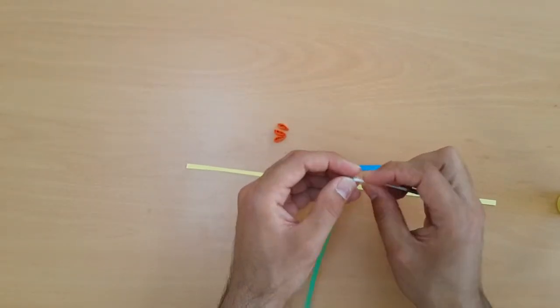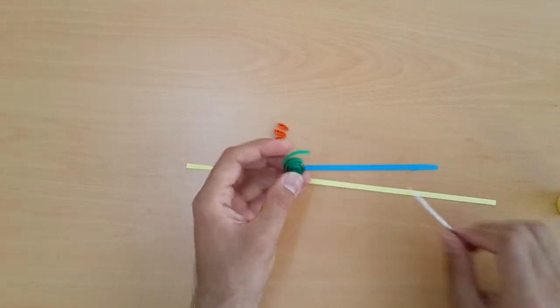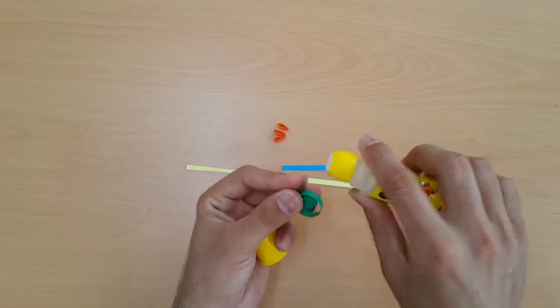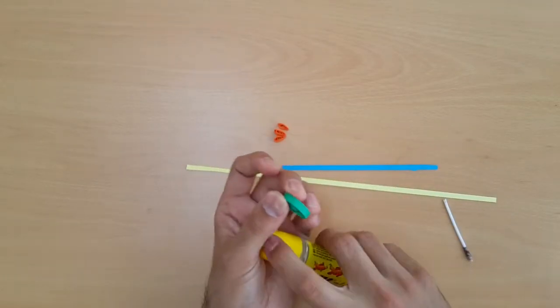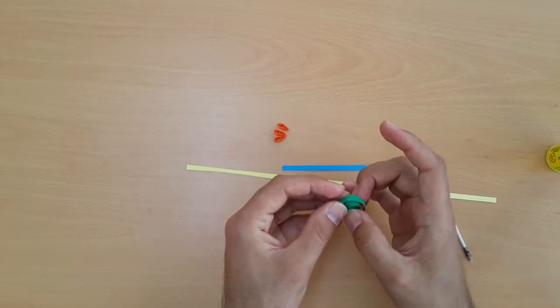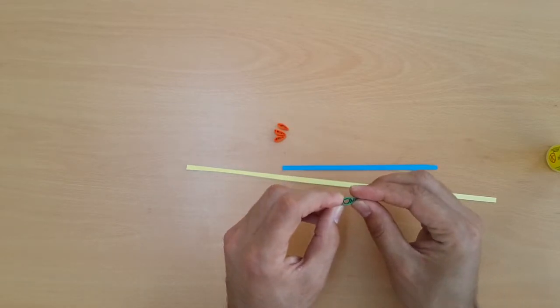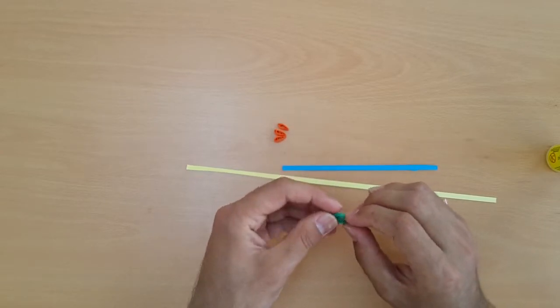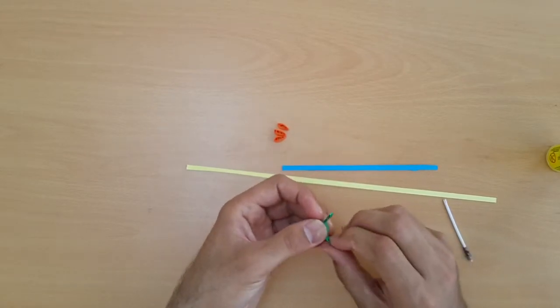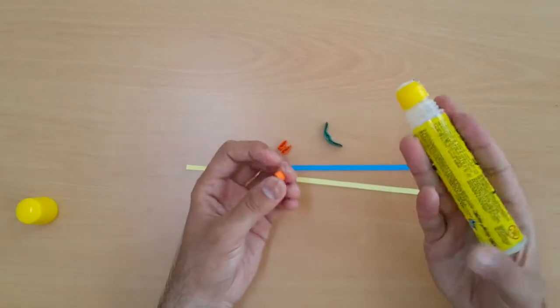Now we will use the green one. We make a size of green, big size. Now we will put them together.